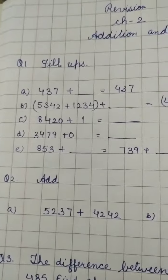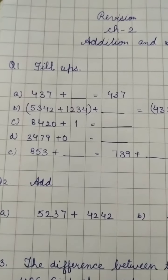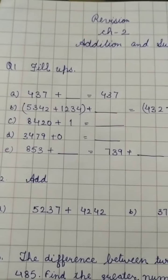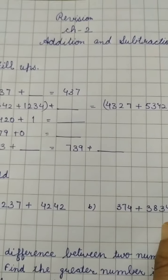C part is 8420 plus 1 is equal to dash. D part is 3479 plus 0 is equal to dash. E part, 853 plus dash is equal to 739 plus dash.